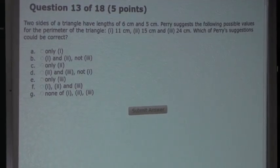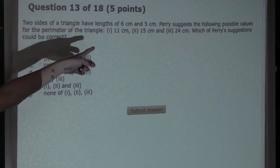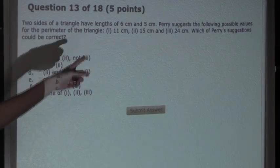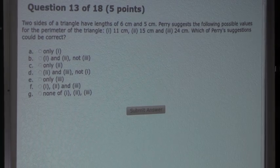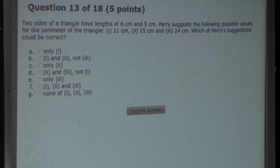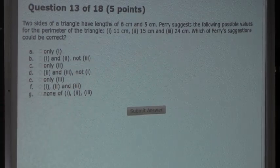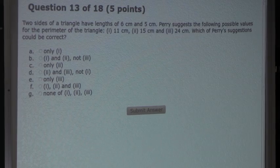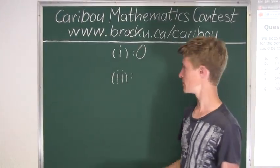Now we will use the same strategy and take the perimeter, which is 15 cm for Case II, and subtract the two side lengths which we know, which are 6 cm and 5 cm. So 15 minus 6 is 9, and 9 minus 5 is 4. Therefore, the third side length for Case II would be 4 cm.